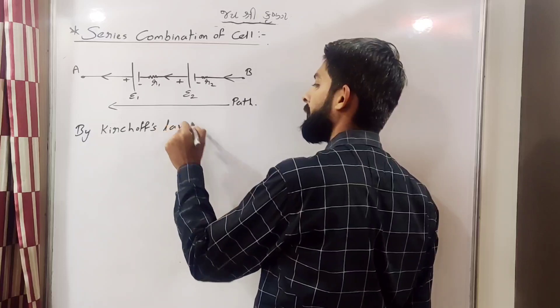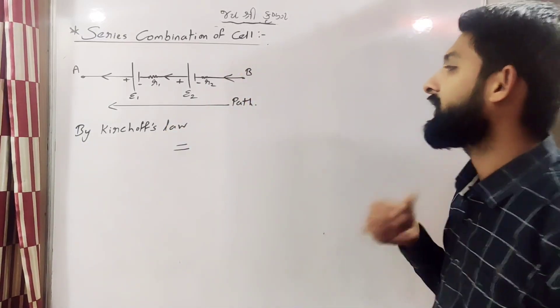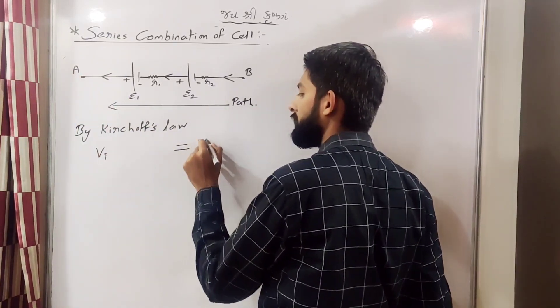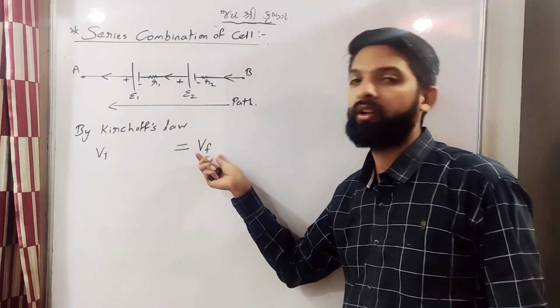Yaha pe equal to ka sign denge hum na. See the sign convention that I follow is yaha pehle initial value, yaha pe final. Yaha pehle initial potential hai, yaha pehle final potential hai.